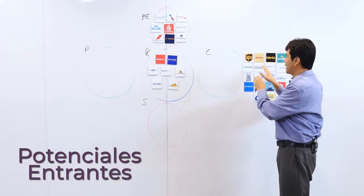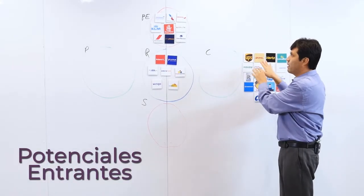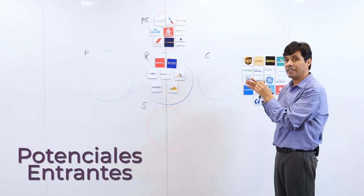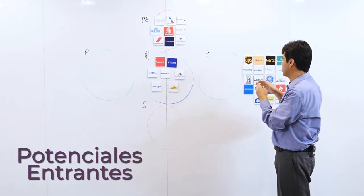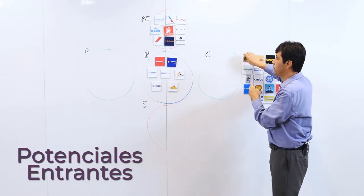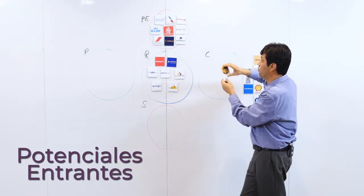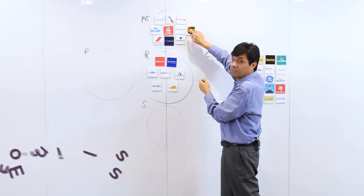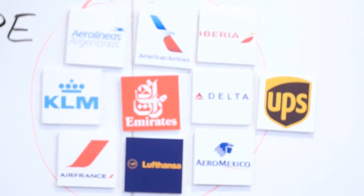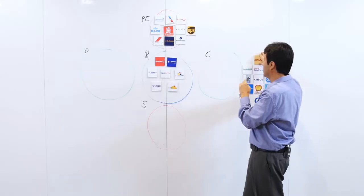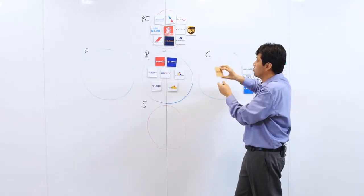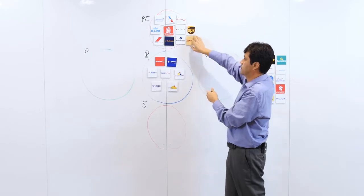También tenemos que mirar que hay empresas que de pronto no cumplen el rol de llevar pasajeros. Este es el caso de UPS y DHL, que son empresas que llevan carga y podrían cumplir en algún determinado momento el rol de llevar pasajeros. Entonces, también podrían considerarse como potenciales entrantes.